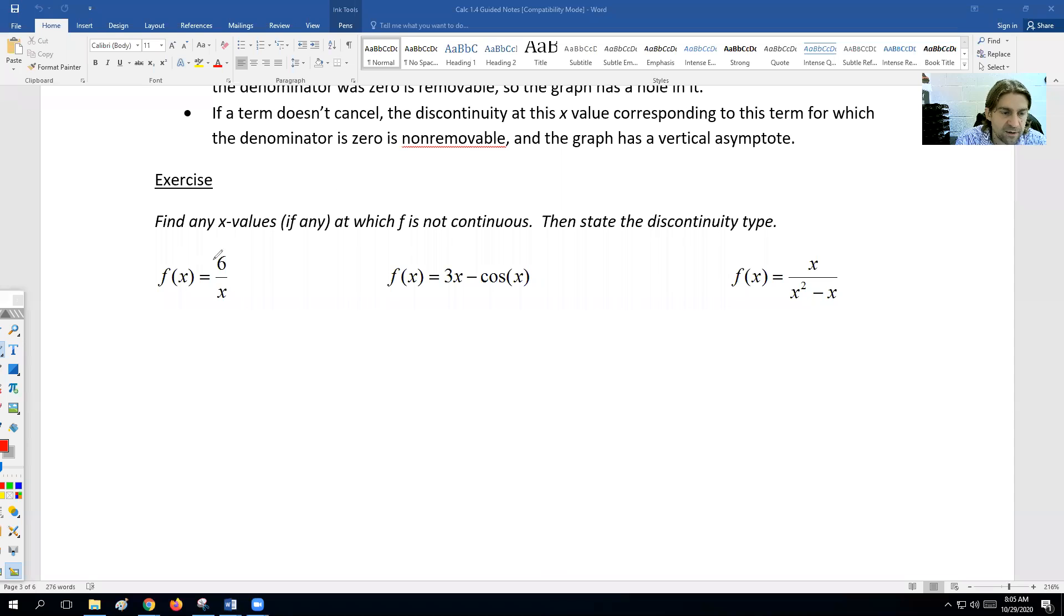Let's start with the first problem. If I look at this denominator, it is just x. So we could say this is discontinuous at x equals zero, because that's the only time that denominator could equal zero. The top cannot factor out an x, so we would say this is non-removable discontinuity.